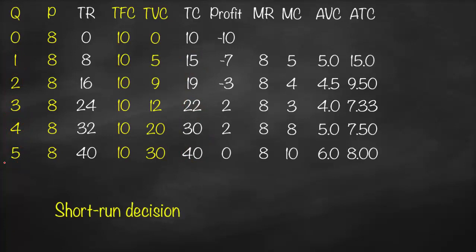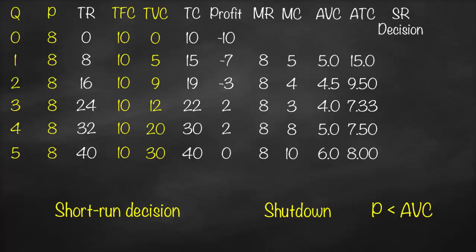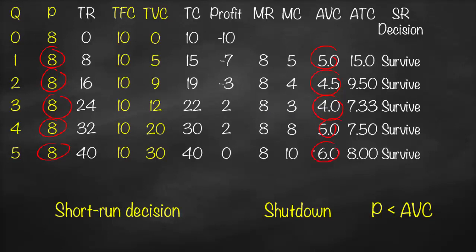For the short-run decision — should the firm survive or shut down temporarily — the firm should shut down in the short run if price is lower than average variable cost. Comparing price (8) with AVC at each quantity: 8>5, 8>4.5, 8>4, 8>5, 8>6. Price exceeds AVC at all quantities, so the firm should survive and stay in business.